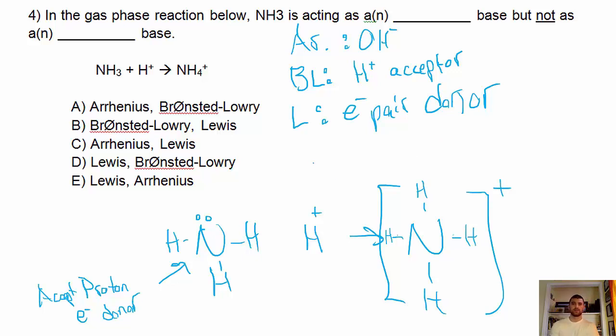So it could have been a Bronsted-Lowry base or it could have been a Lewis base, but it definitely was not an Arrhenius base. So we know that it has to have that as my second option. And there's only one of these things that fit E. It was acting as a Lewis base, but not as an Arrhenius base.